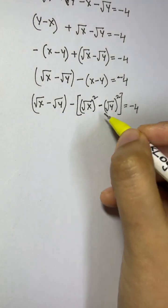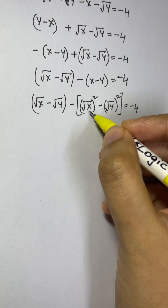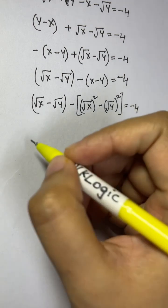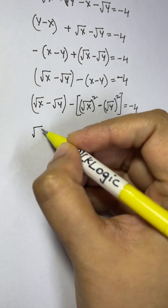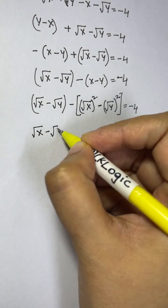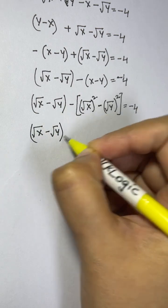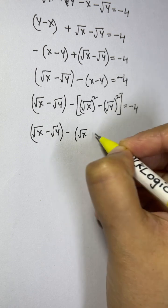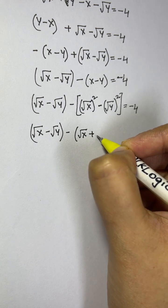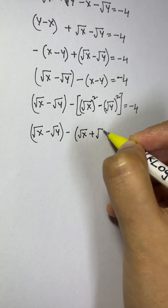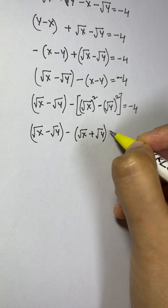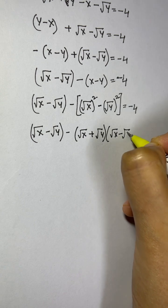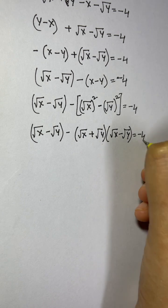Now I apply the identity a squared minus b squared equals a plus b times a minus b. So root x squared minus root y squared becomes root x plus root y times root x minus root y. The expression becomes: root x minus root y minus of root x plus root y times root x minus root y equals negative 4.